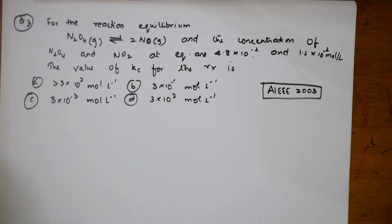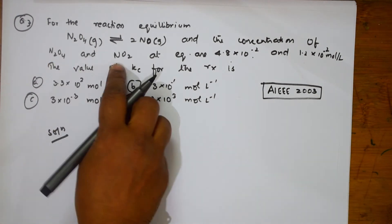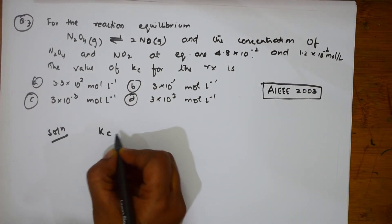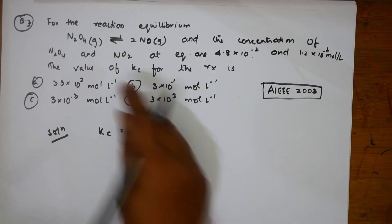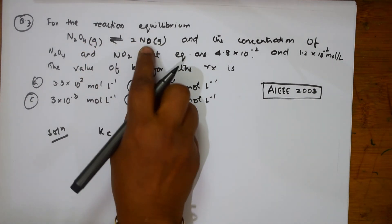Simplest numerical, I should say. What is this actually? They have given two things, isn't it? Now, what is Kc? Kc is equal to concentration because only two are there, product by reactant.